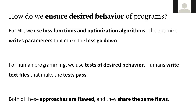For human programming, we don't use loss functions — we use tests of desired behavior. Humans write text files that make the tests pass; our goal is that the code we write passes all of the tests in our testing suite. What I think is interesting is that both of these approaches are flawed and have failure modes. Making the loss go down on the training set doesn't always give us a good algorithm, and passing our tests does not always give us good code. They actually end up sharing some of the same flaws — some better known in traditional programming, some better known in machine learning.